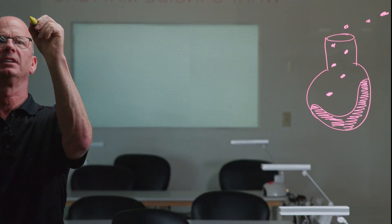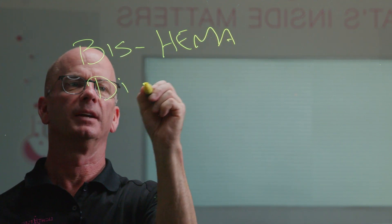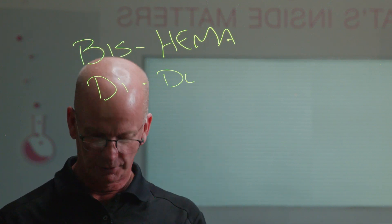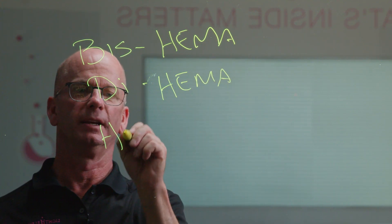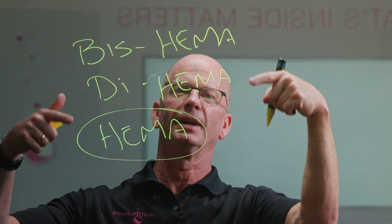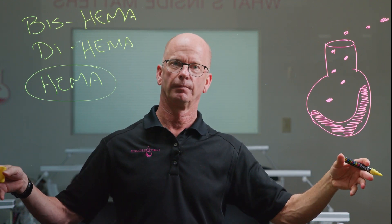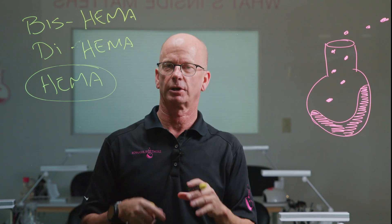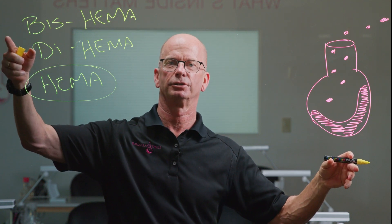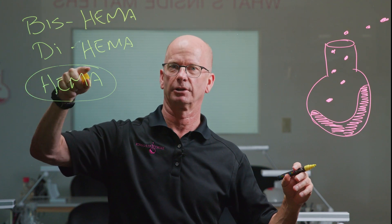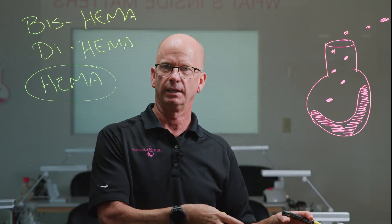BiSHEMA is the same thing as DiSHEMA. BiSHEMA and DiSHEMA are basically two HEMA molecules used to cap an oligomer. When we build an oligomer, we take a chemical called a polyol, cap that with an isocyanate, and then cap that with HEMA. If there are two HEMA groups on there, it's BiSHEMA — or it can also be DiSHEMA, depending on what nomenclature the manufacturer of that resin registers with INCI in the EU.